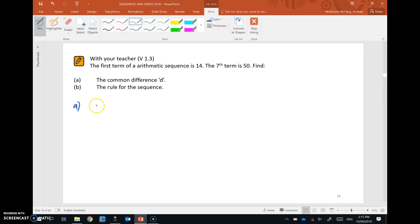We start with thinking of this sequence like this, where we've got the first term is 14, and then we don't know the other terms, so I'm just going to leave them blank. There's 2nd, 3rd, 4th, 5th, 6th, the 7th term is 50. So 1st, 2nd, 3rd, 4th, 5th, 6th, 7th term, 50.